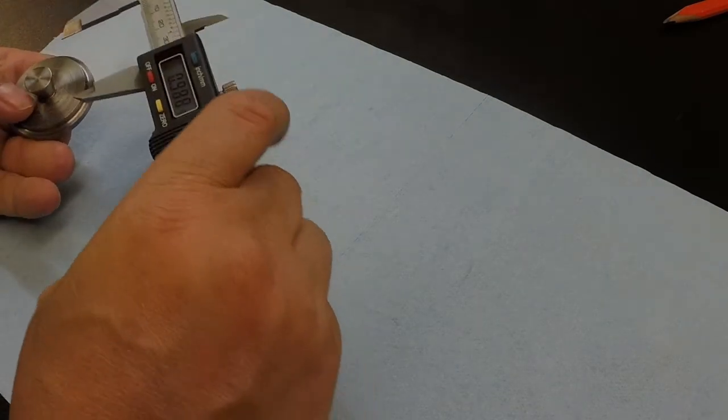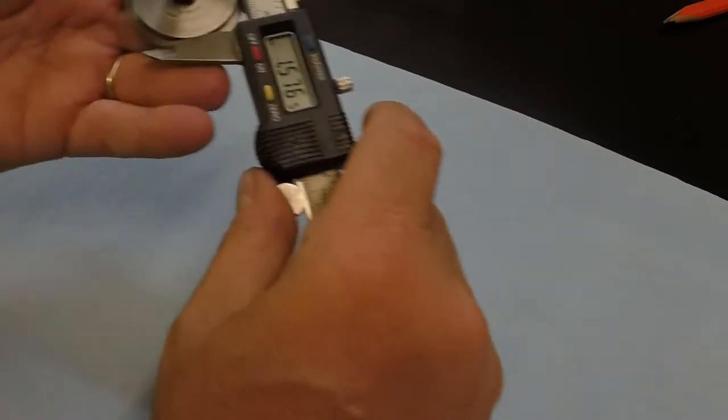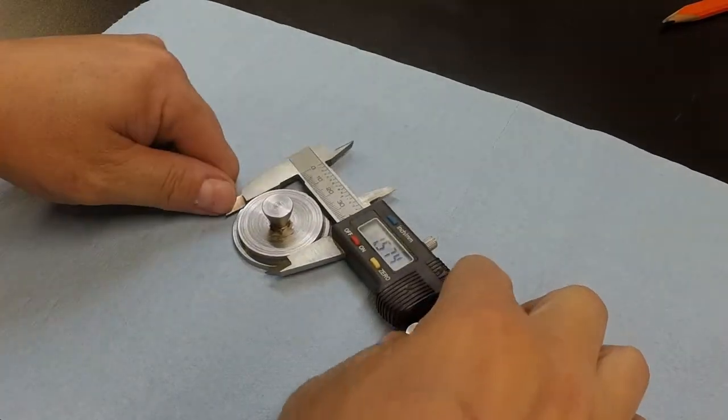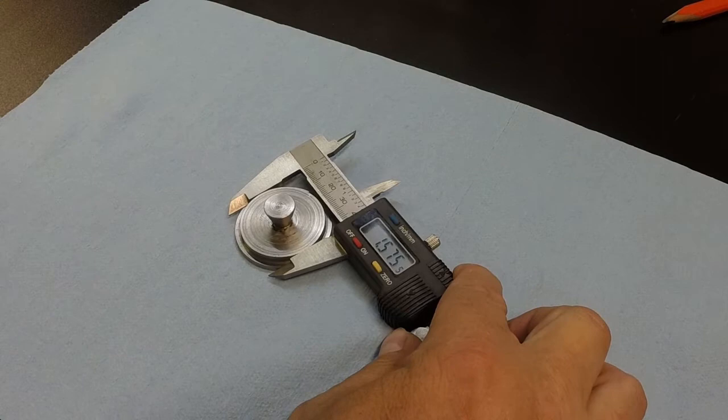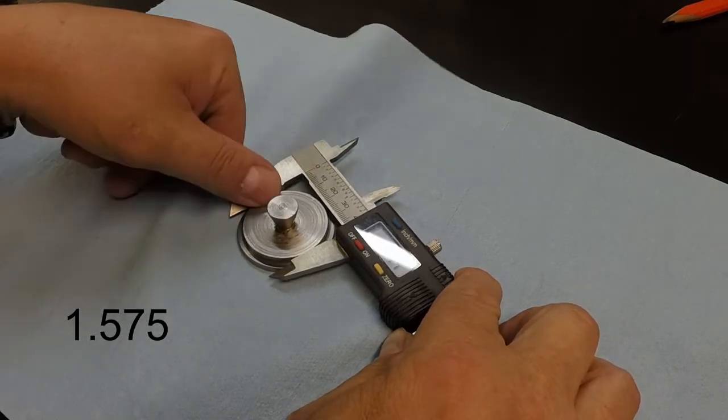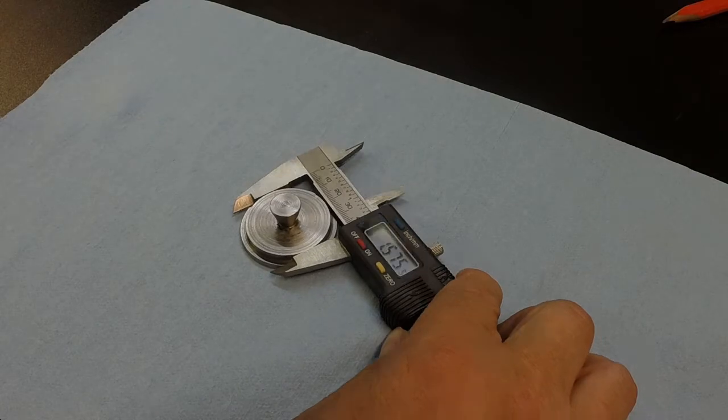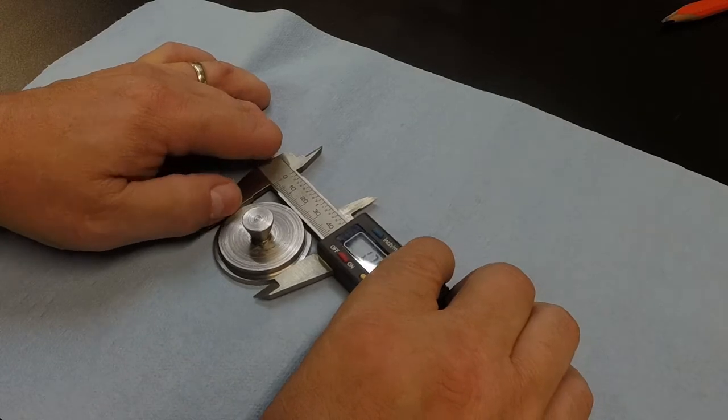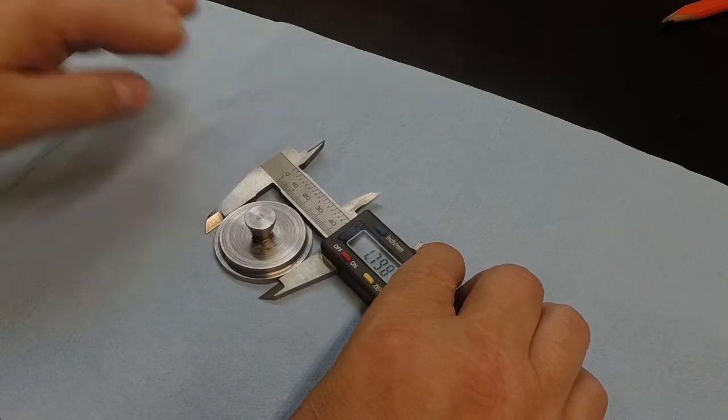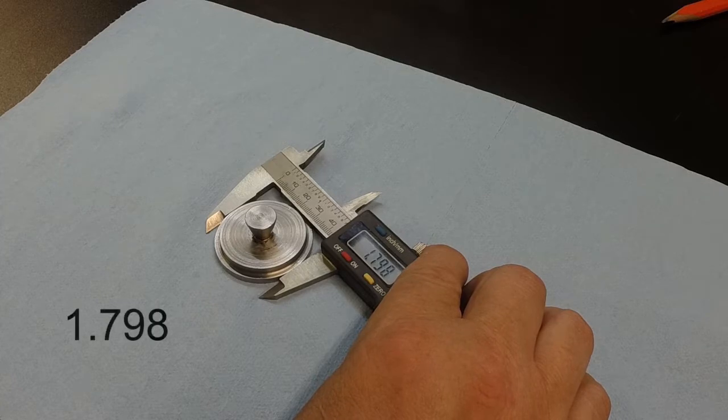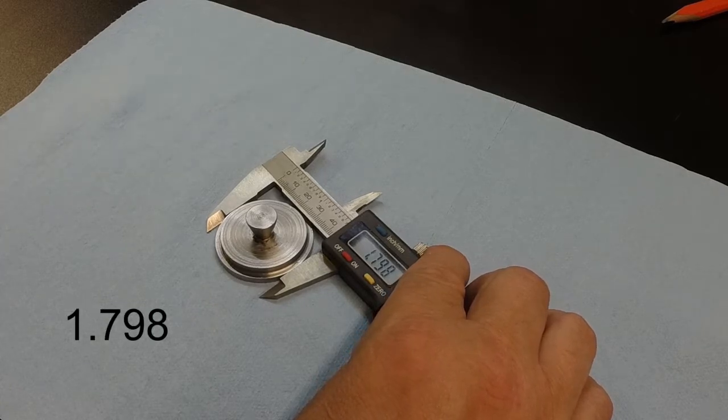One of the other things, let me get these measurements here. Here's the inside diameter. Okay, that's 1.575. Okay, and then the total outside diameter is 1 inch and almost 800 thousandths, 798 thousandths. So 1.798.